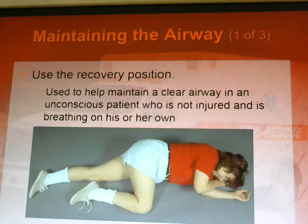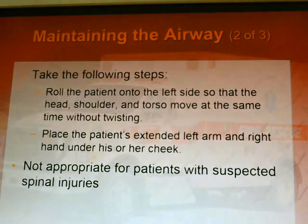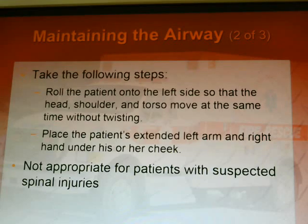Use of the recovery position: this is a position to help maintain a clear airway in an unconscious patient who does not have an injury, especially a spinal injury, and is breathing on his or her own. Roll the patient on their left side so the head, shoulder, and torso move at the same time without twisting. Place the patient's extended left arm and right hand under his or her cheek. This is not appropriate for patients with suspected spinal injury.